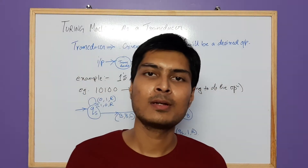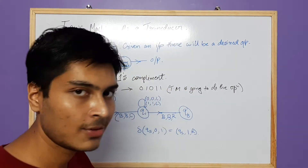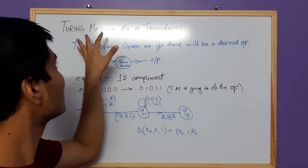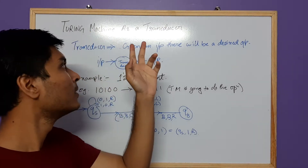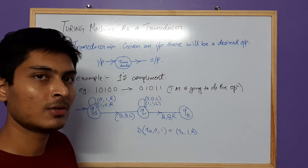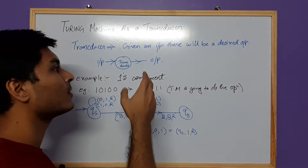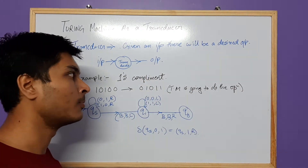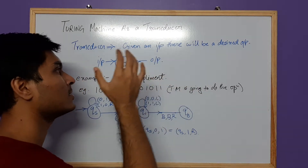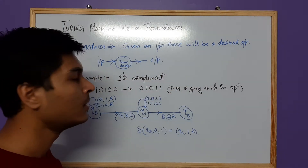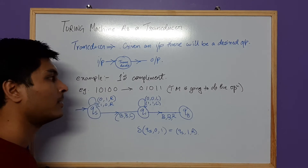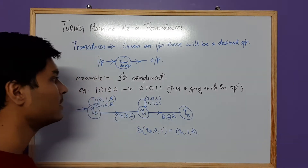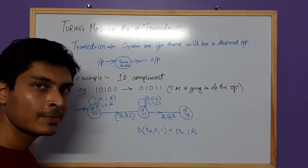We are going to discuss the Turing machine as a transducer. A transducer means whenever we give an input, there would be an output generated — it processes the input and produces an output. That means the transducer is basically a function, and the Turing machine can work as a transducer. That's what we are going to see here.